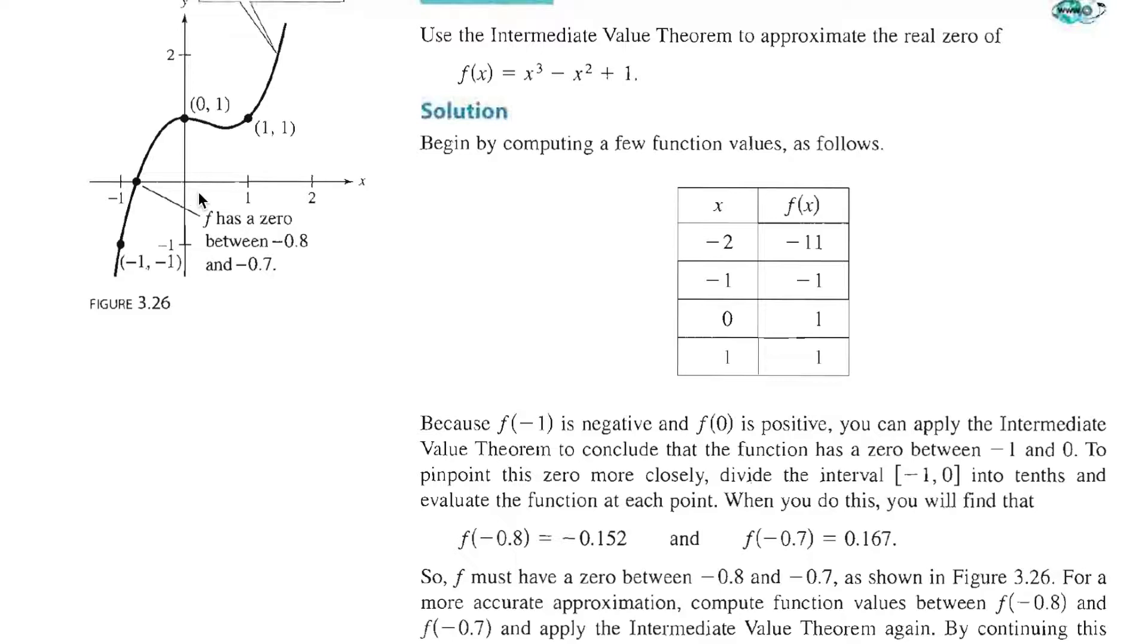The Intermediate Value Theorem says that since we have a negative value for f(x) at negative 1 and a positive value when x equals 0, somewhere in between we have to cross the x-axis and form a zero.